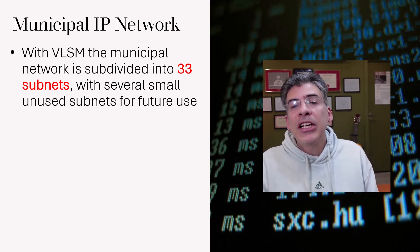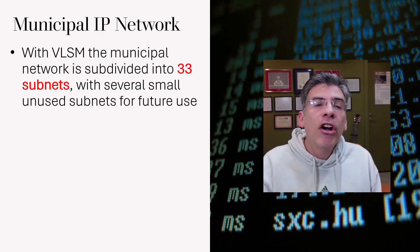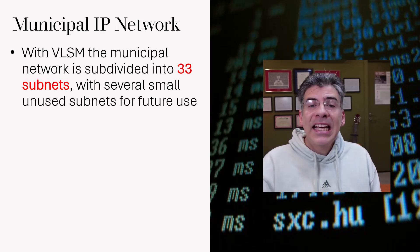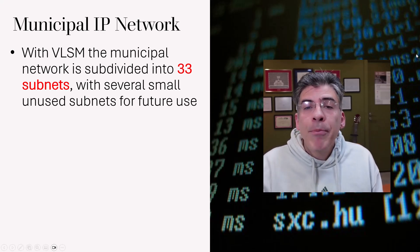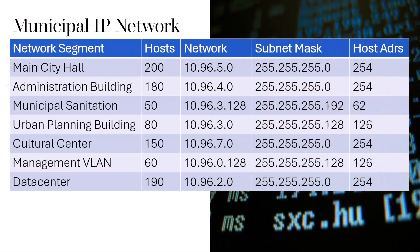The municipality currently has 33 used subnets with several that are currently unused and are saved for future use. One last important thing when we perform VLSM and choose our subnet sizes: we must make sure that we are leaving enough room for future growth. If a particular network segment grows in the number of hosts and you have not taken this into account, you may not have room to accommodate them in your designed subnets.